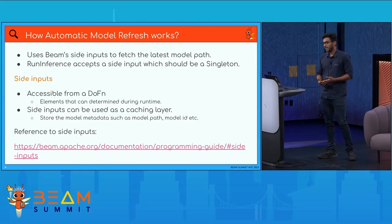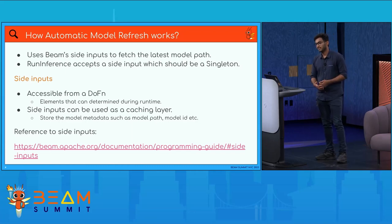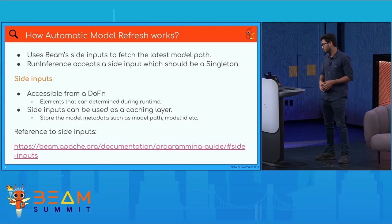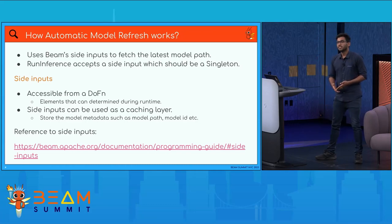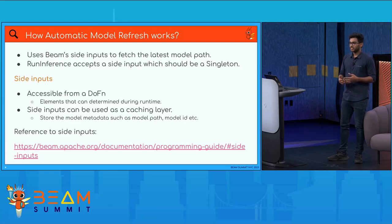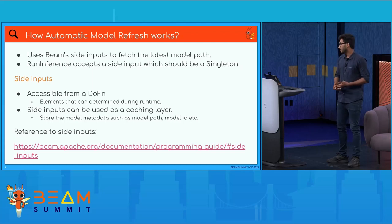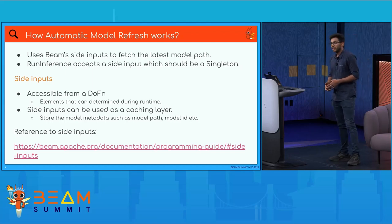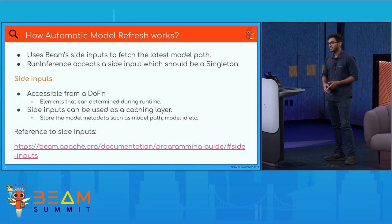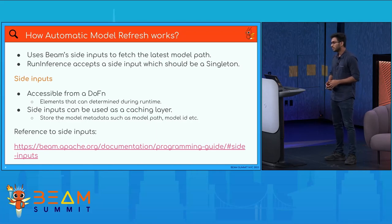What are side inputs in Apache Beam? Side inputs are a PCollection view accessible from a DoFn. In the process method of the DoFn, you can access the side input during runtime. Side input elements are not determined at pipeline construction time but during runtime. If you have elements that change during runtime, you can pass them as side inputs to DoFns. Side inputs can also be used as a caching layer to store small metadata that fits in memory, like a model path or model ID.